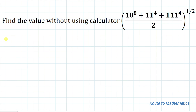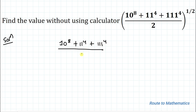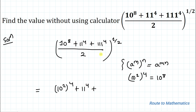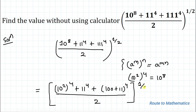Without any delay, let's start the solution. We have: 10 to the power 8, plus 11 to the power 4, plus 111 to the power 4, divided by 2, whole to the power 1/2. We know the exponential law that (a^m)^n = a^(mn). So we can write 10^8 as (10²)^4, since 4 × 2 = 8. Applying this logic, we get (10²)^4 plus 11^4 plus 11^4, divided by 2, to the power 1/2.